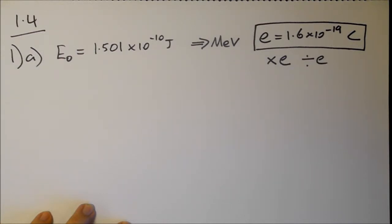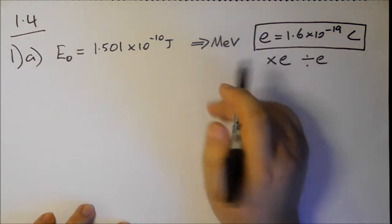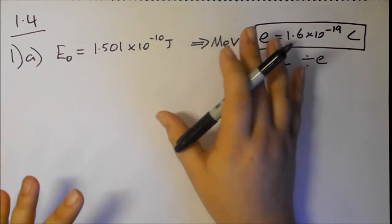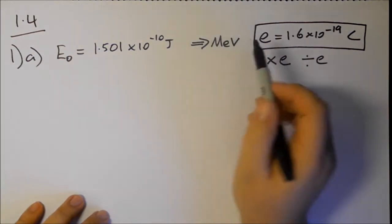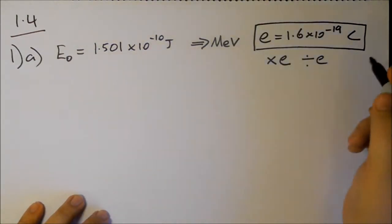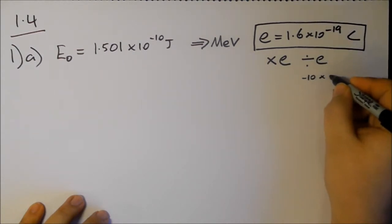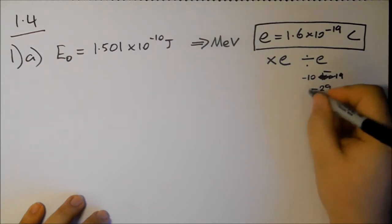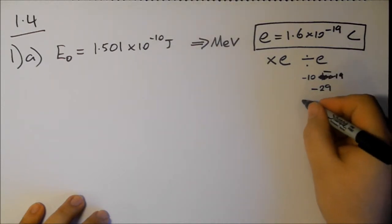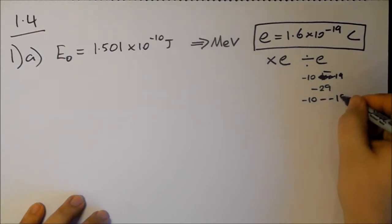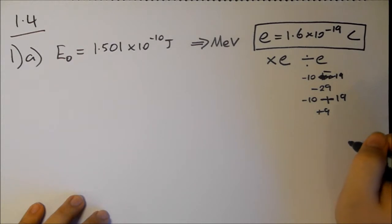How do I work out which one? I know I want a number in the mega range, about a million, so 10 to the 6-ish. Clearly not something that's 10 to the minus ridiculous. If I times these two numbers together, I get minus 10 times minus 19, I add the powers, so I'll end up with minus 29. Not what I want. If I divide, then I take away the powers. Minus minus becomes a plus, and I get minus 10 plus 19, so I get plus 9. Much more in the ballpark of what we want.